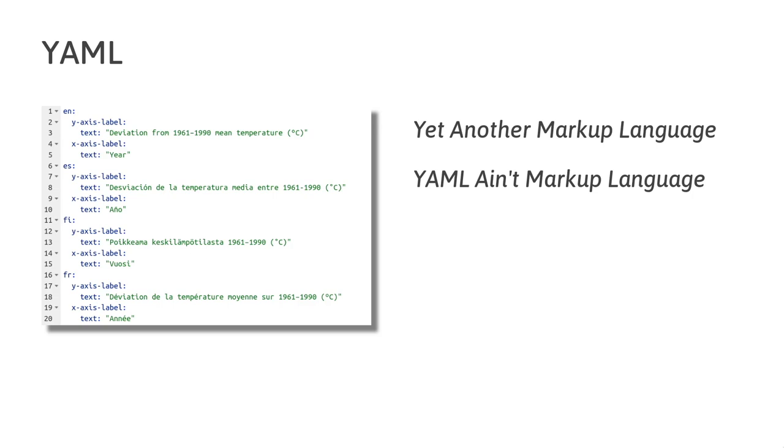YAML, if you're not familiar with it, used to stand for Yet Another Markup Language and it's now become the recursive acronym YAML Ain't Markup Language to specifically distinguish its use as being data oriented rather than a traditional markup for documents. It's often used in configuration files and you might have seen it at the top of R Markdown documents — that's YAML. It's very structured and importantly it's human readable, which was important because we needed the translators who are non-technical to be able to easily work with the format.